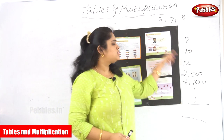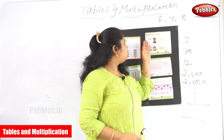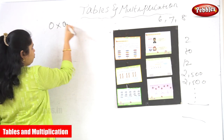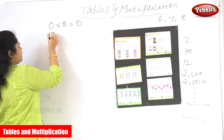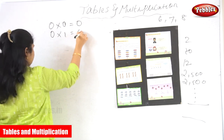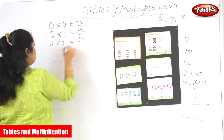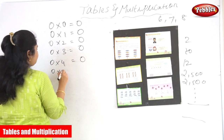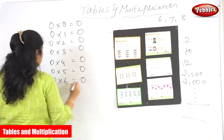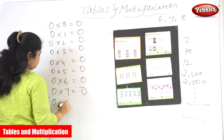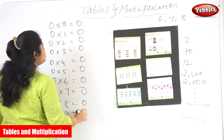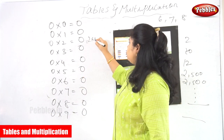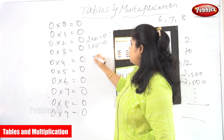Multiplication by 0 — any number times 0 is 0. There is no group, so there will be no product. For example, 0 times 1 is 0, 0 times 2 is 0, 0 times 3 is 0, 0 times 4 is 0, 0 times 5 is 0, 6 times 0 is 0. Any number multiplied by 0, the answer will be 0.